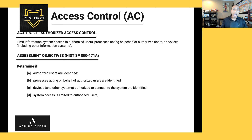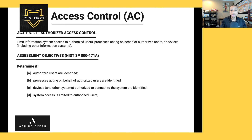One step further: if you have a OneDrive folder where you're storing FCI, limited to certain users, have a user not on that list try to access that folder — they should receive an access denied message and not be able to access it. There are four assessment objectives for this foundational access control requirement. This is about controlling who can process, store, or transmit FCI — if someone doesn't have a need to know, they shouldn't have access.